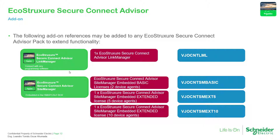You can see here we have the link manager, which is for the laptop, and the site manager, which is for the HMI. For the HMI we have three different licenses. Now, what is the difference between the extended and the basic license?